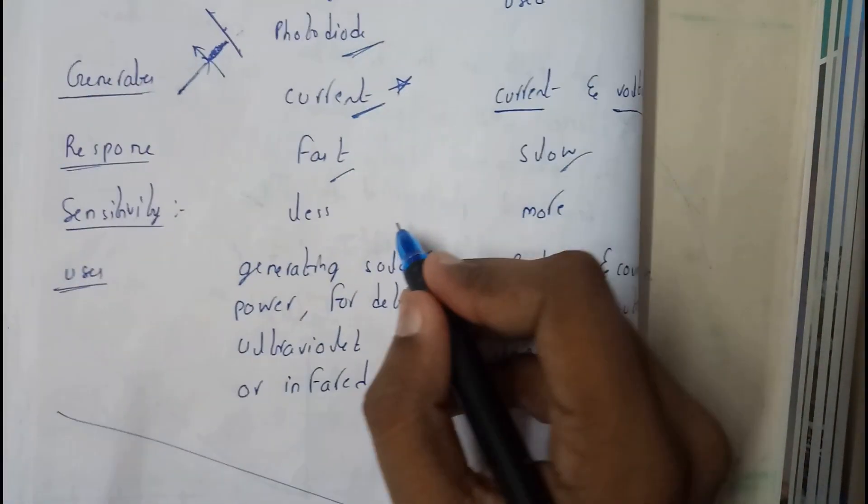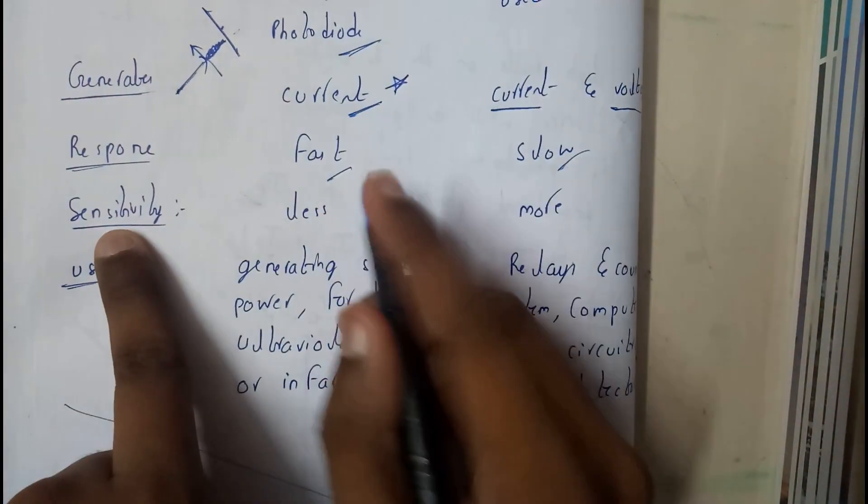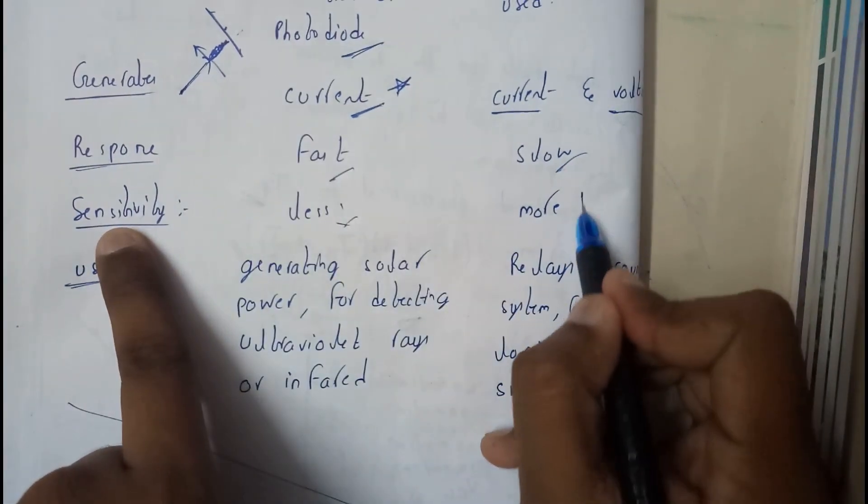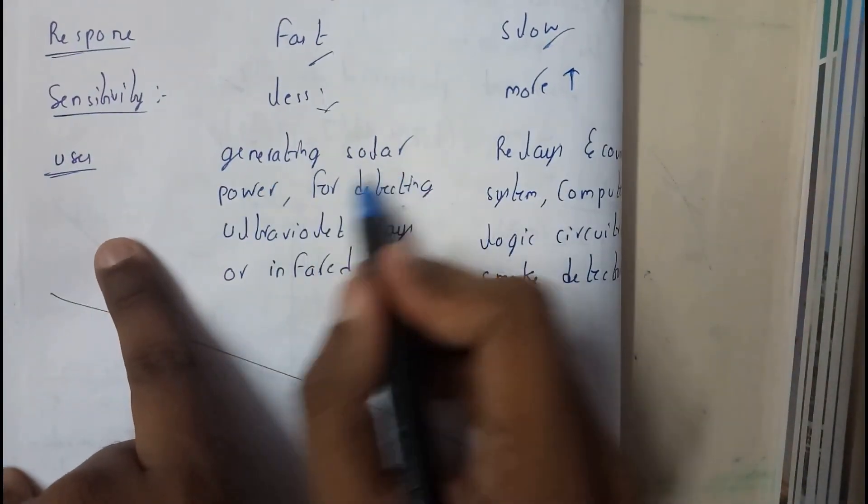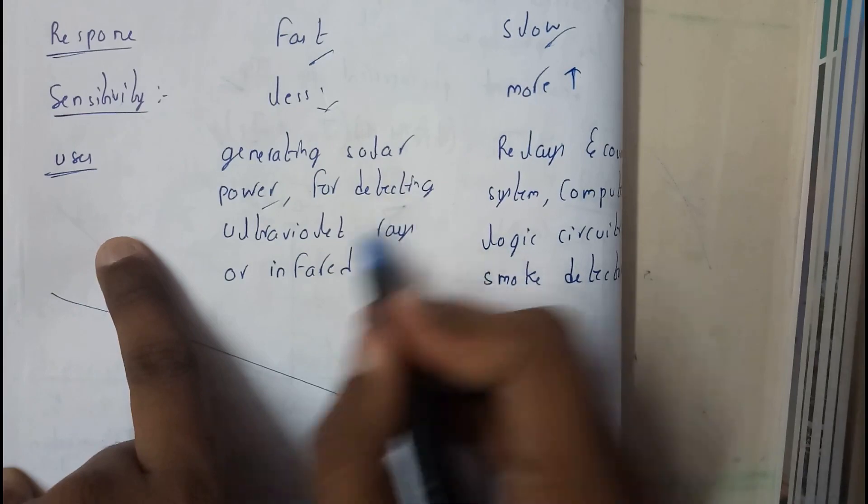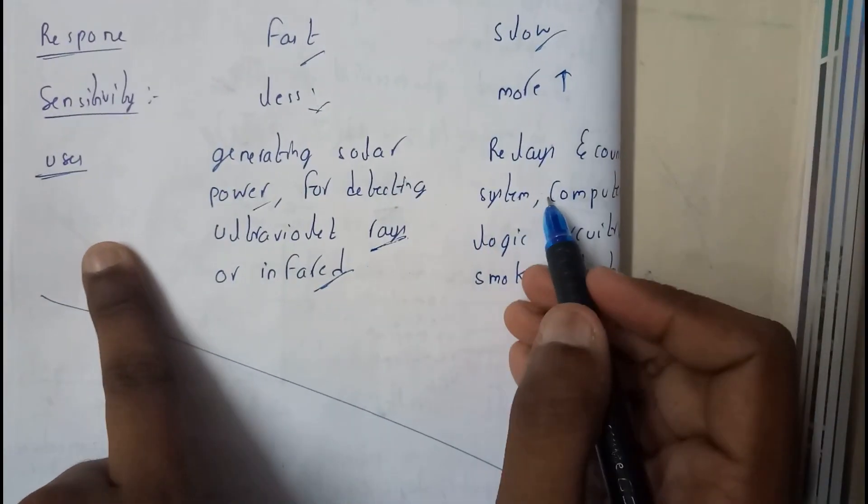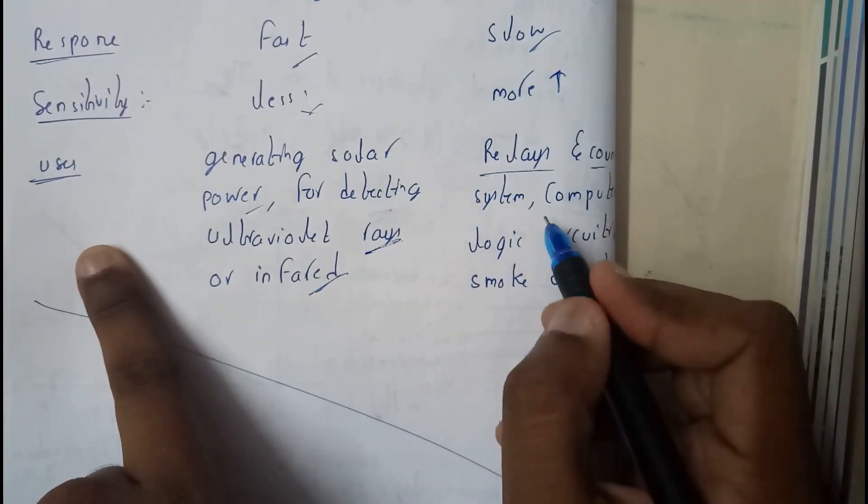So like that, its response speed is very fast. Sensitivity for photodiode is really less whereas for phototransistor it is more. Uses - solar power for detecting ultraviolet rays. For phototransistor - relay, counting systems.